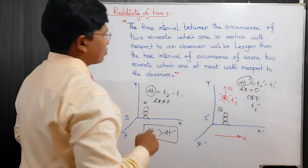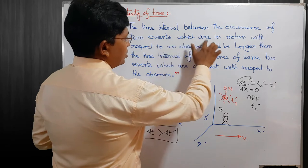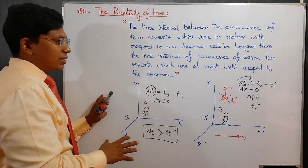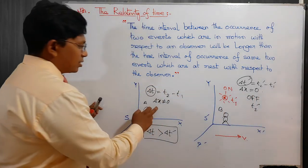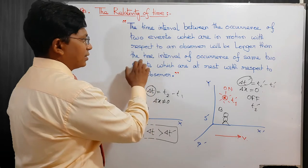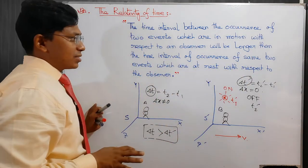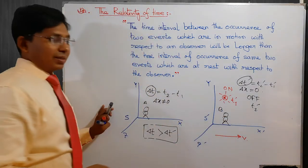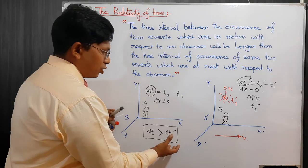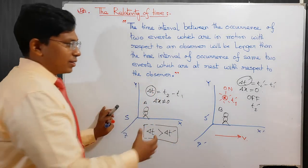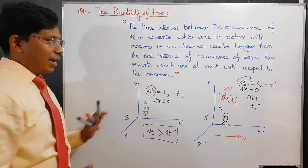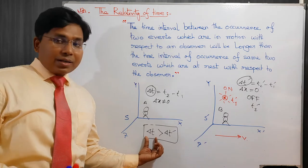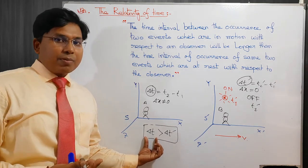The time interval between the occurrence of two events which are in motion with respect to observer A will be longer. Person B is in motion, so del-t is slightly longer than the time interval of the same two events which are at rest with respect to the observer. The time measured by B is slightly shorter, and the time measured by A is slightly longer — meaning time is not absolute. This phenomenon is called time relativity, and another name for it is time dilation.